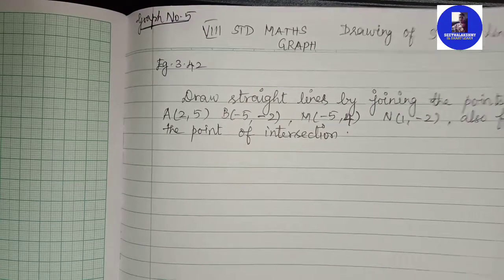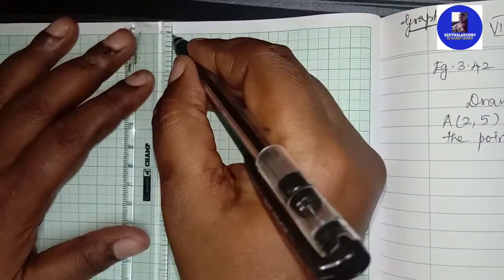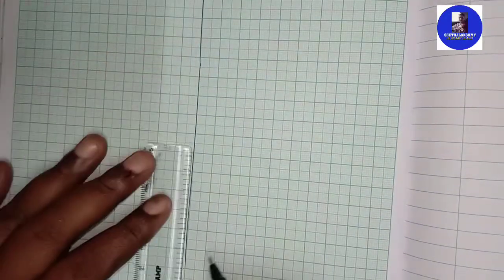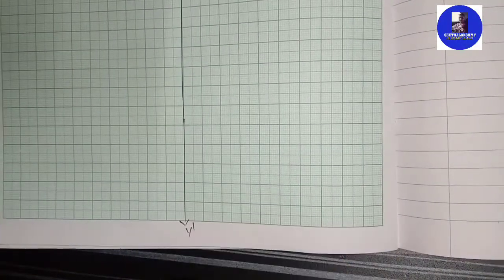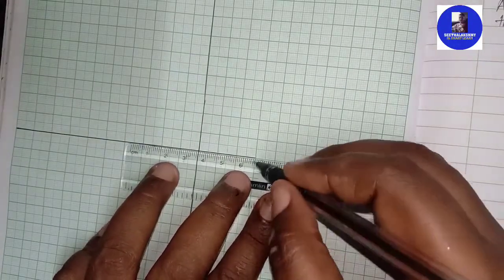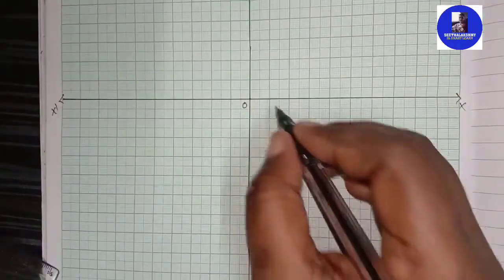This is the point of intersection. Now we have a graph with a center, y-axis. This is the point of intersection. The horizontal center is the x-axis. This is the point of intersection.